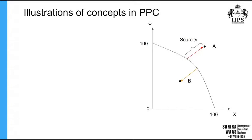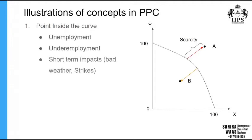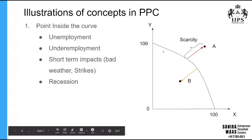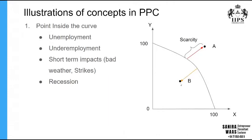We are going to illustrate two kinds of points on the PPC. One is point A, which is a point outside the curve. The other is point B, which is a point inside the curve. A point inside the curve basically represents an unemployed, underemployed, or recessionary situation — where though the economy has full capacity represented by the curve, it is only operating below that level.